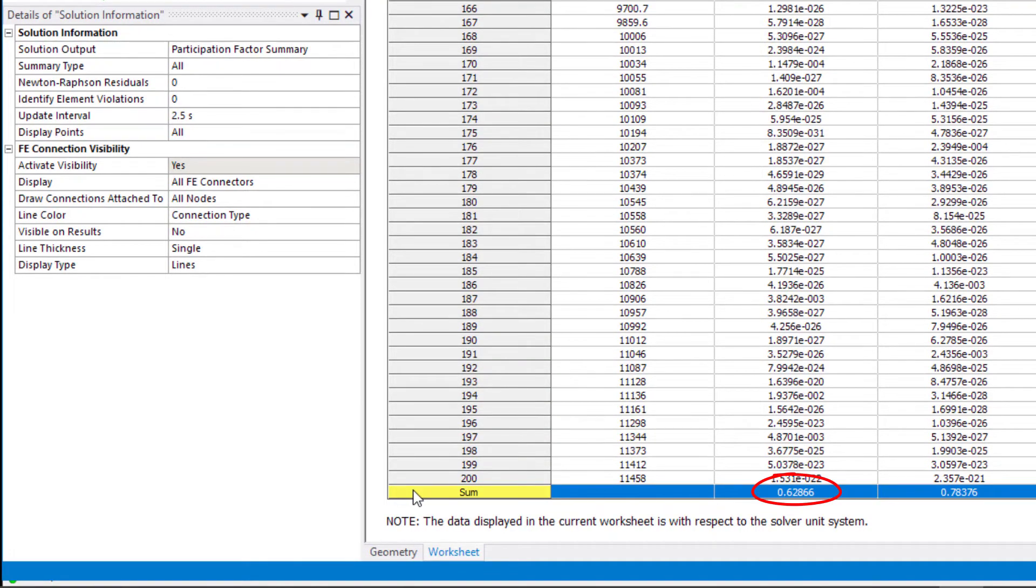We can see a higher percentage of the actual mass moving in x direction when 200 modes are extracted, but it is still not 100% of the actual mass. Why?